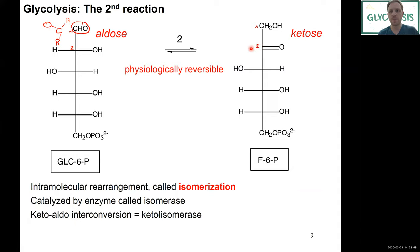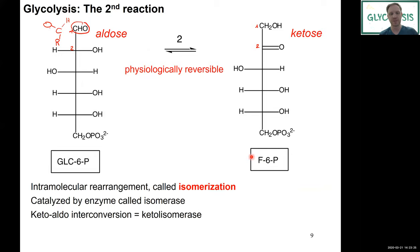Moving the carbonyl to C2 might not seem important initially — it doesn't release energy. But we'll see why it's critical in the next reactions. Because this is an intramolecular isomerization, there isn't much change in free energy, so it's physiologically reversible. We're moving from glucose-6-phosphate (an aldose) to fructose-6-phosphate (a ketose) — a keto-aldo interconversion catalyzed by a ketol isomerase.